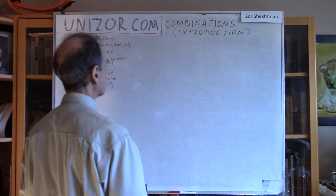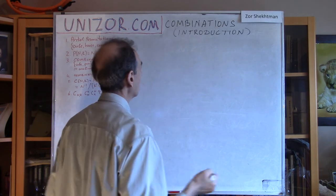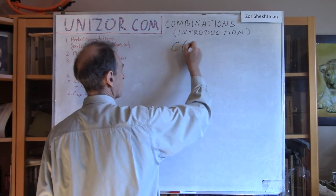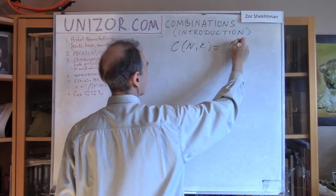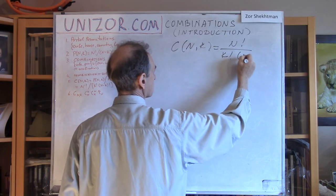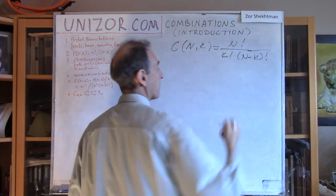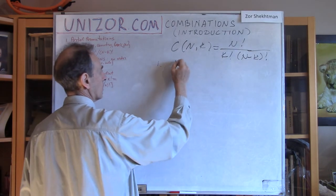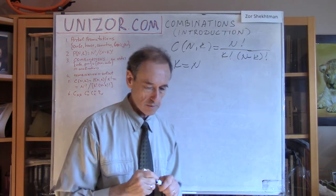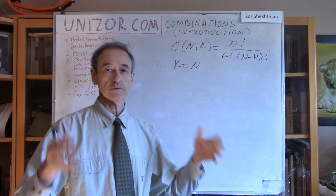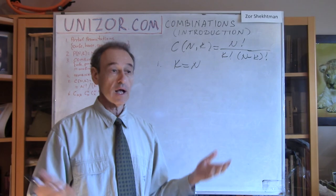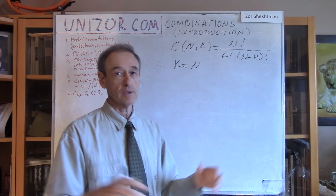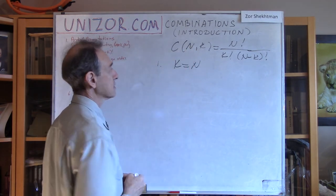Now let's consider a few trivial cases. After deriving a formula, it's very important to make sure the formula makes sense. Case number one: k equals n. I'm choosing a subset of n objects out of n different objects. How many ways can I do it? Obviously, there is only one way — there is only one subset, which is the full set. This formula is supposed to give me one.